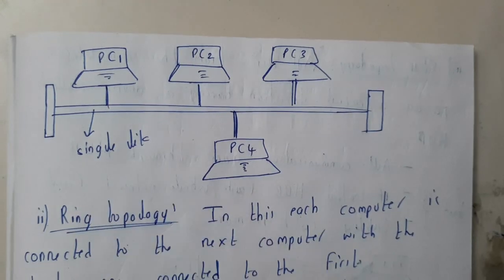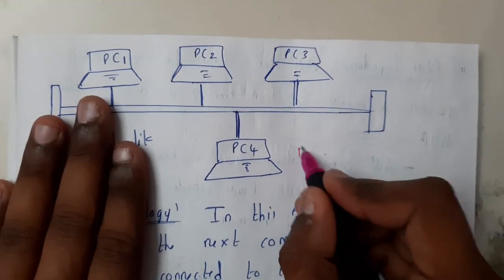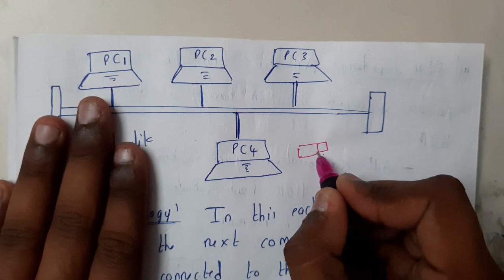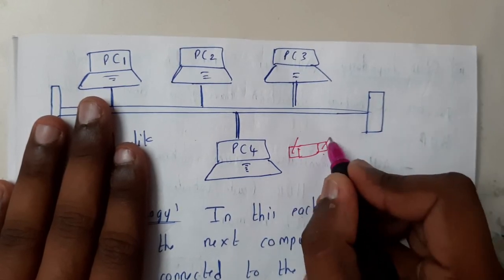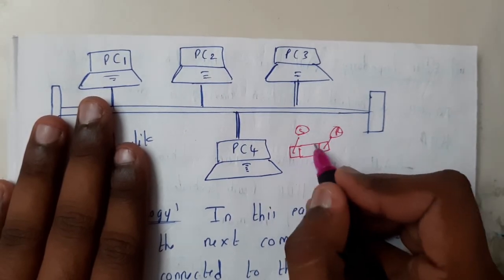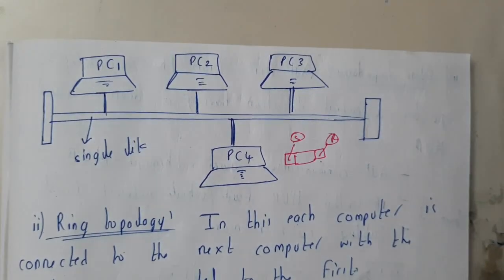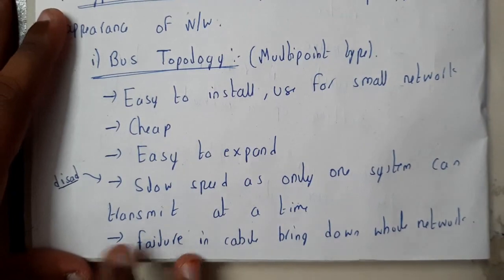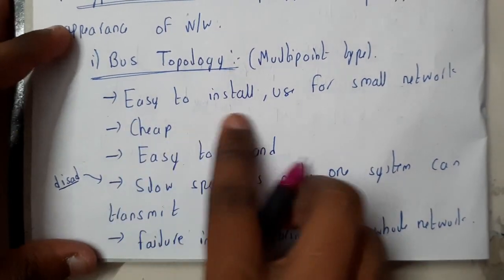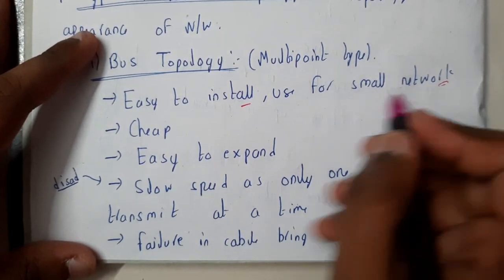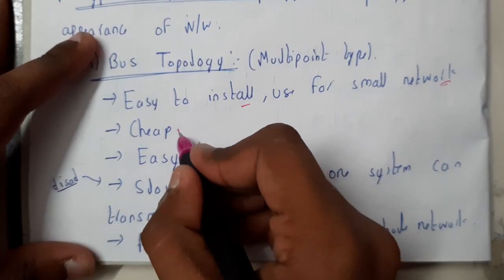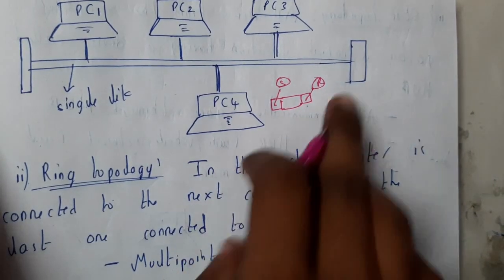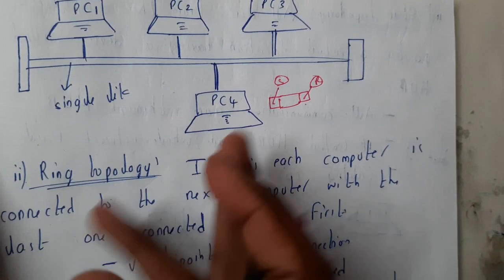There will be a MAC code — according to that, a device will accept and collect the data. Basically, with the message you will be sending a MAC code with the sender's and receiver's addresses, so we can understand which device it is meant for. From the diagram we can say that bus topology is easy to initialize, suitable for small networks, really cheap, and easy to expand — if you want to add a device you just connect it directly.